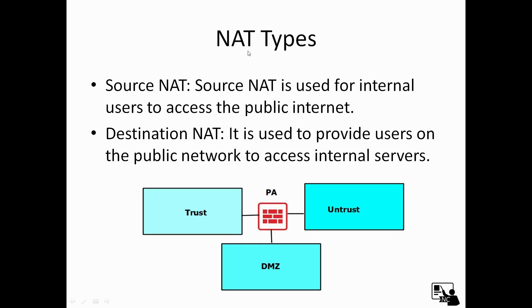So there are two types of NAT. One is source NAT and the next one is destination NAT. When we are translating only the source IP address into a public IP address, that is called source NAT. And when we are translating the destination IP address to our internal IP address, that is called destination NAT.